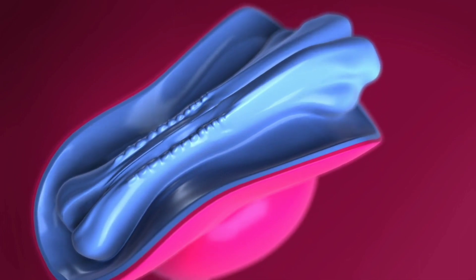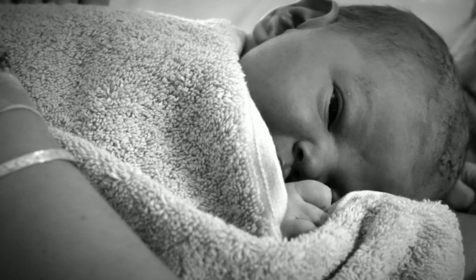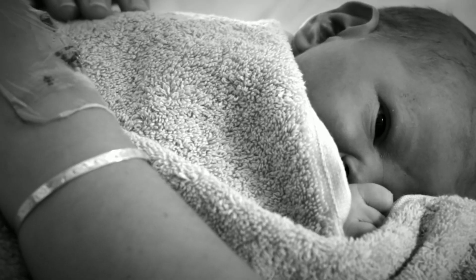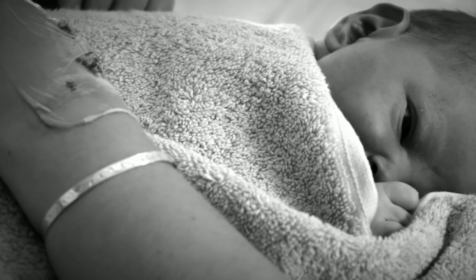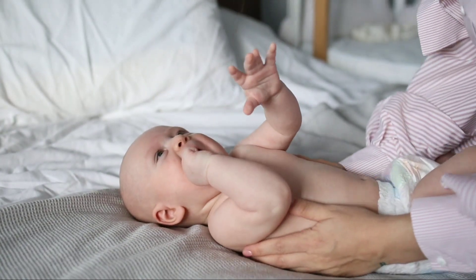The posterior neuropore closes by the 28th intrauterine day. In normal babies, neurulation occurs in two distinct phases: primary neurulation during weeks 3 and 4 of gestation, leading to development of the brain and spinal cord, and secondary neurulation during weeks 5 and 6, with formation of the lower sacral and coccygeal cord.